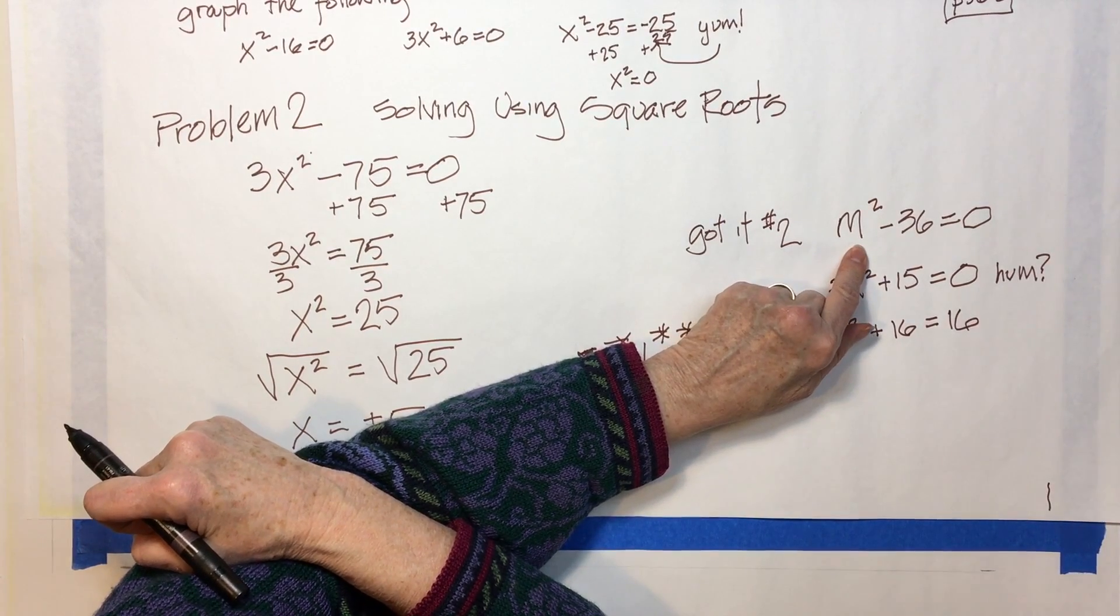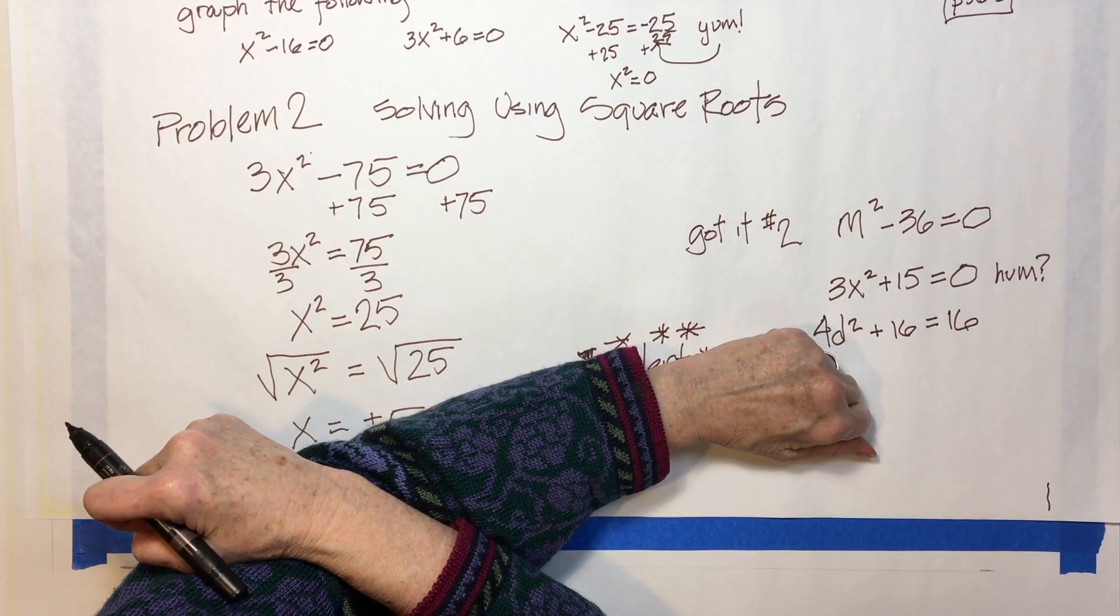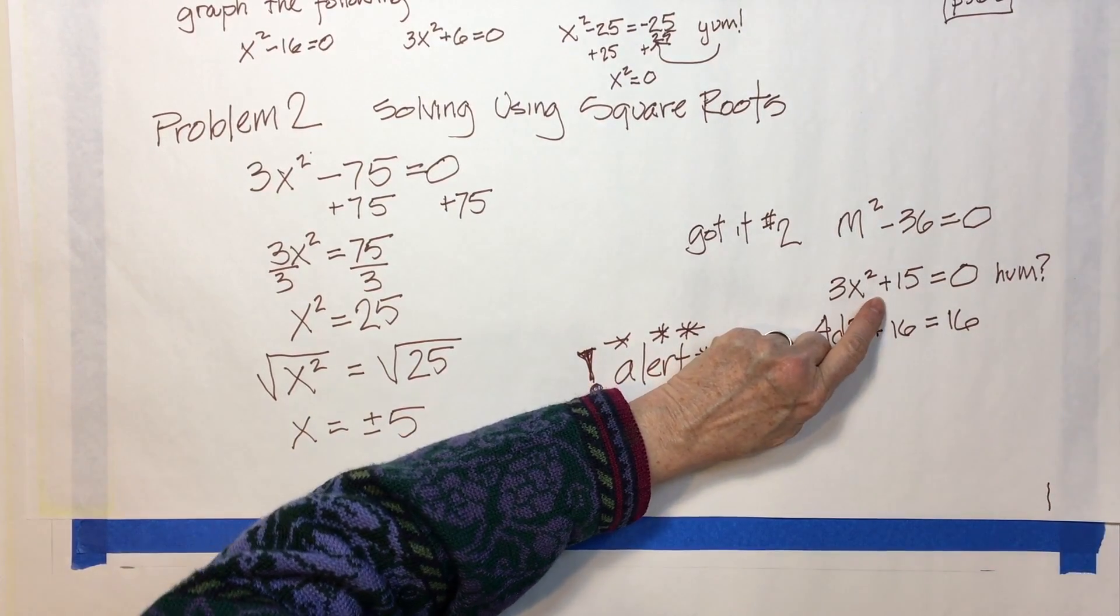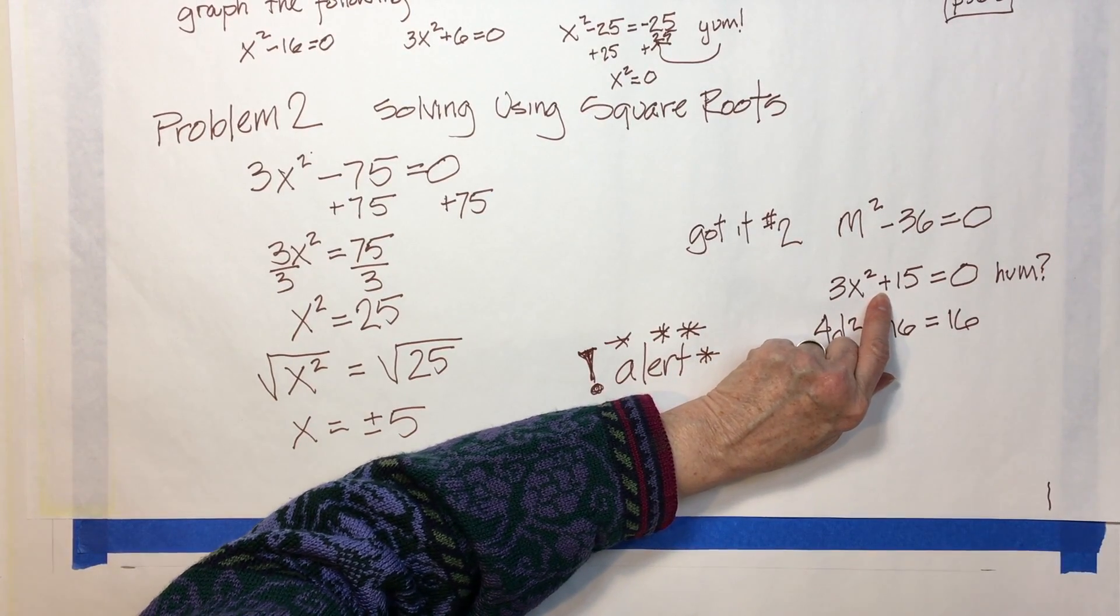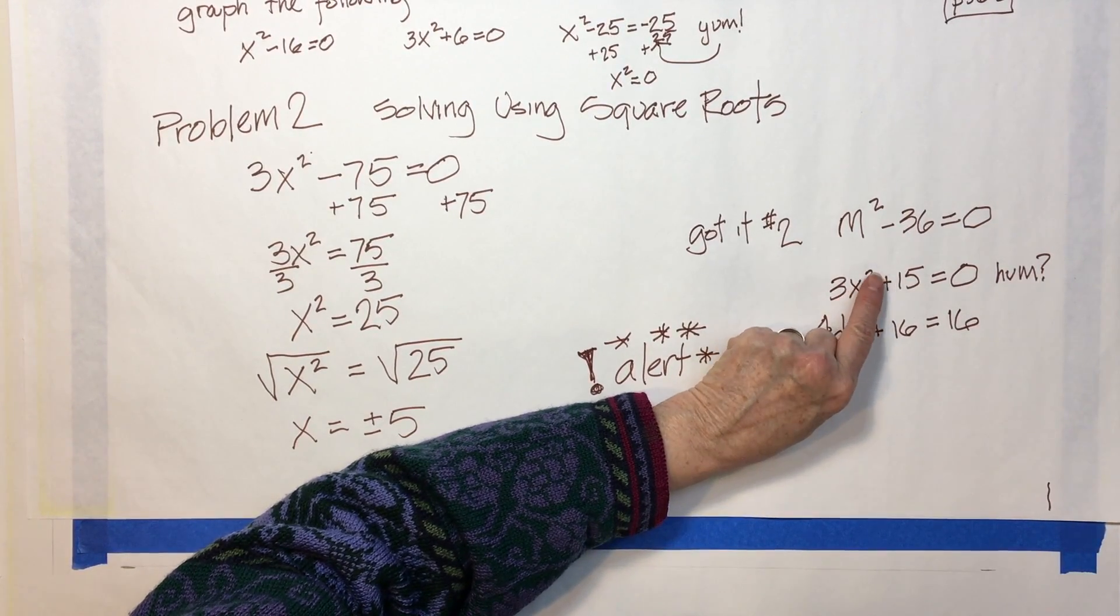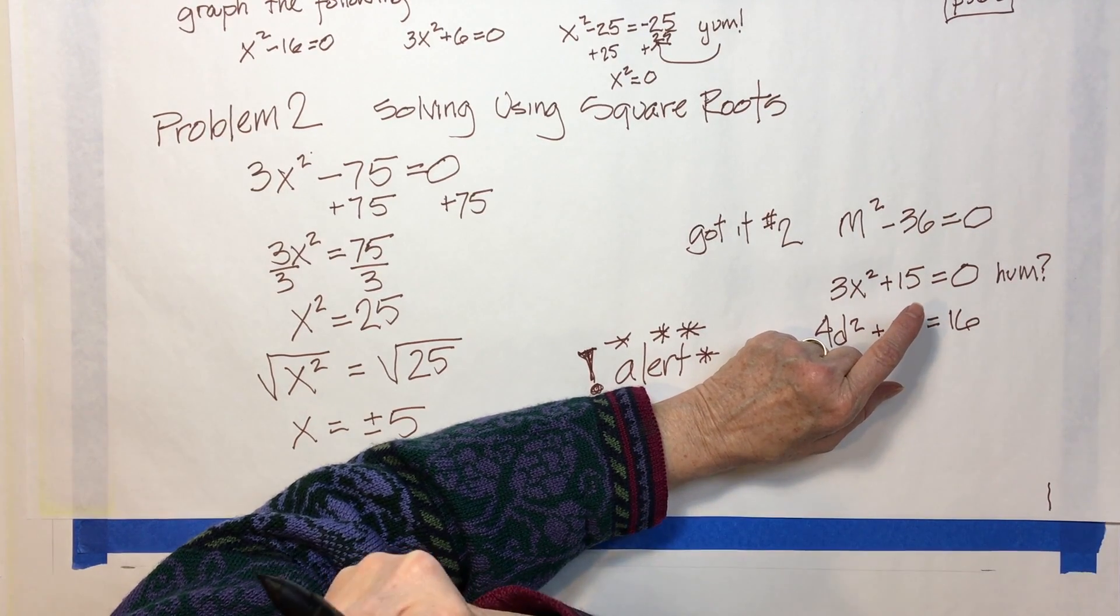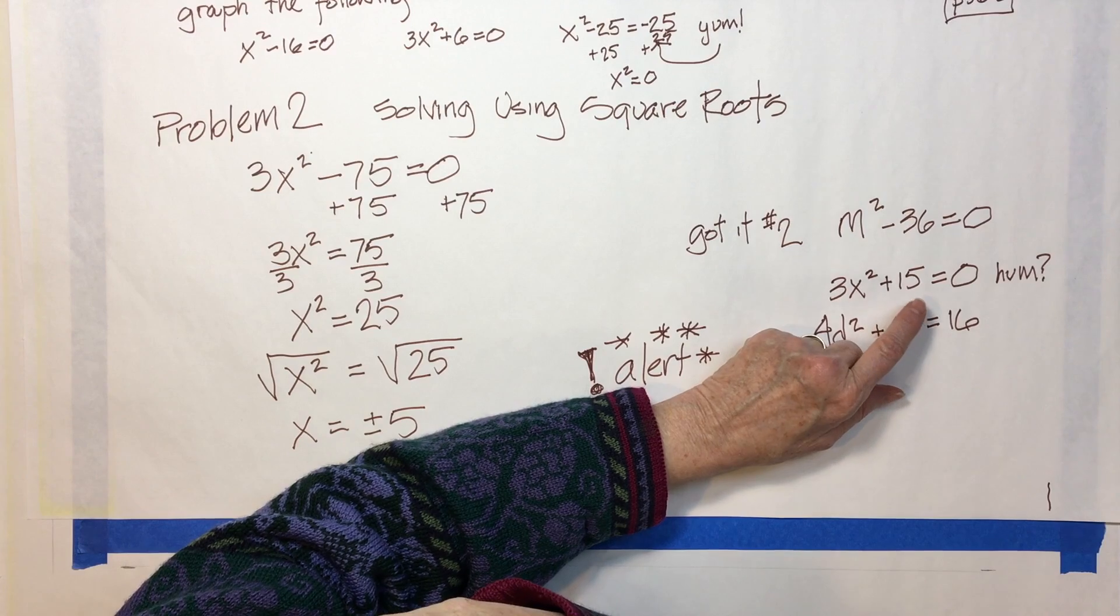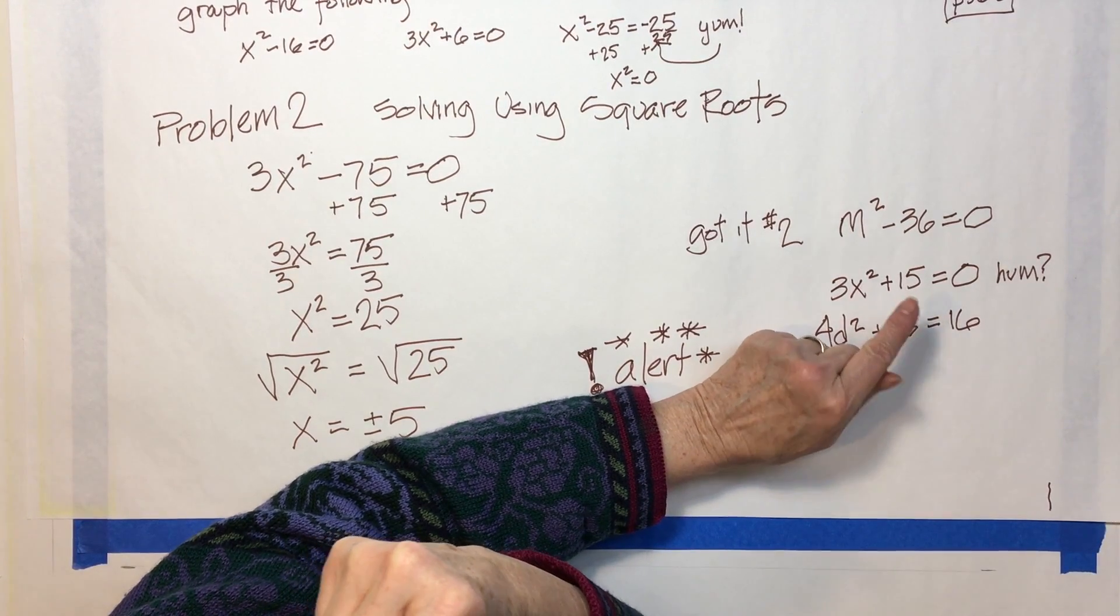Over here you want to follow the same pattern, so you want to move that 15 over, but then you're gonna have 3x squared equals negative 15. And at this point in your journey through algebra 1, you're not ready to deal with the square roots of negative numbers, so this one has no solution.